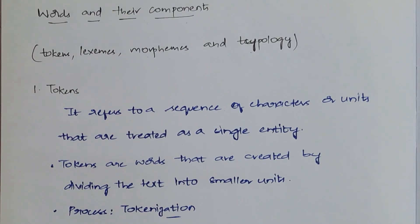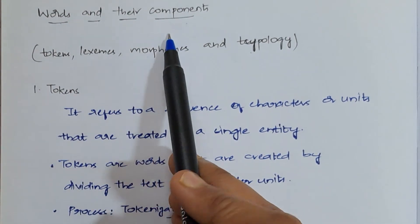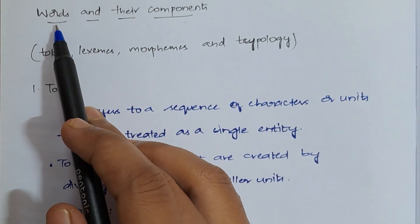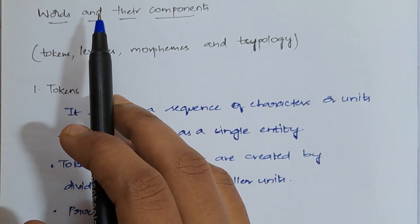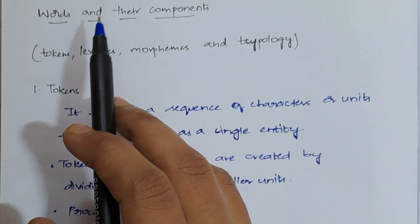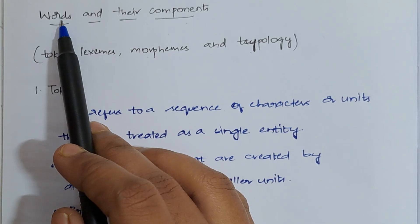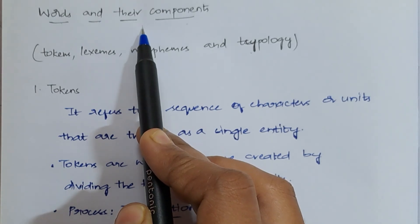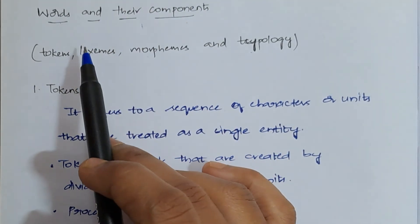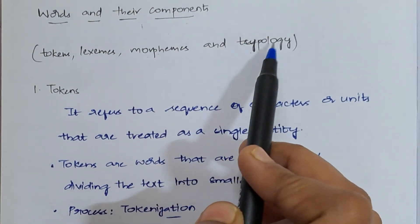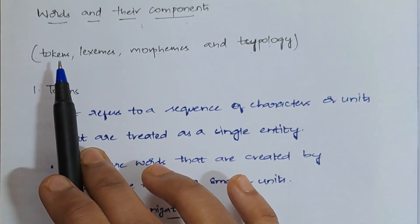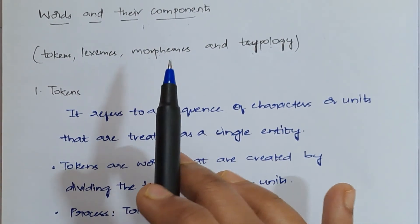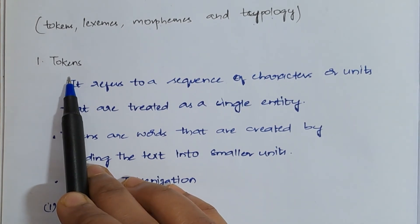Welcome back to my channel. In my previous video I discussed the five phases of NLP, and in this video I am discussing words and their components. Words are nothing but a meaningful unit of a sentence — by using words you construct meaningful sentences. There are mainly four components: tokens, lexemes, morphemes, and typology. Let's discuss each of these components.